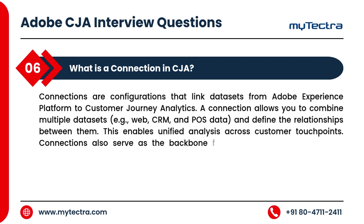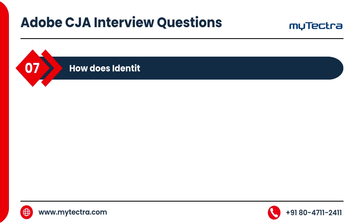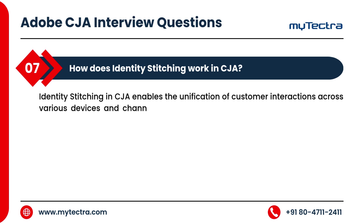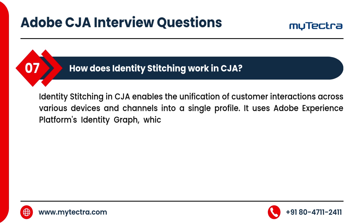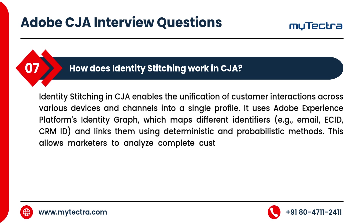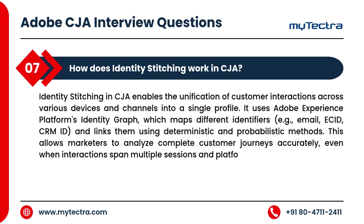Connections also serve as the backbone for creating data views used in Analysis Workspace. How does identity stitching work in CJA? Identity stitching in CJA enables the unification of customer interactions across various devices and channels into a single profile. It uses Adobe Experience Platform's Identity Graph, which maps different identifiers — email, ECID, CRMID — and links them using deterministic and probabilistic methods. This allows marketers to analyze complete customer journeys accurately, even when interactions span multiple sessions and platforms.